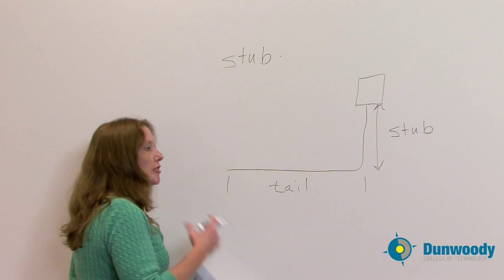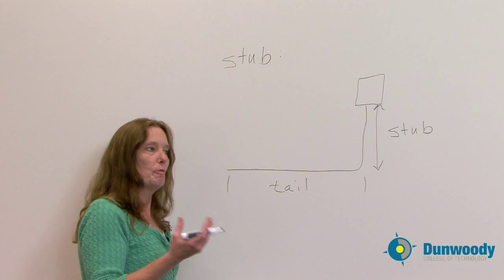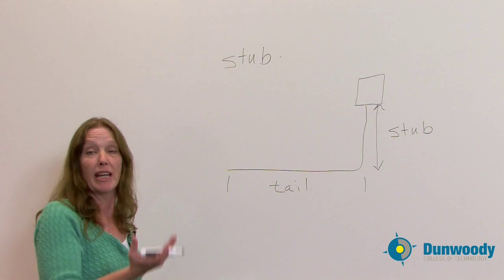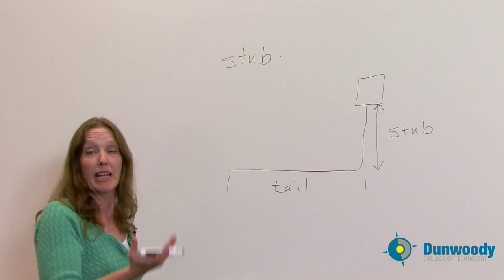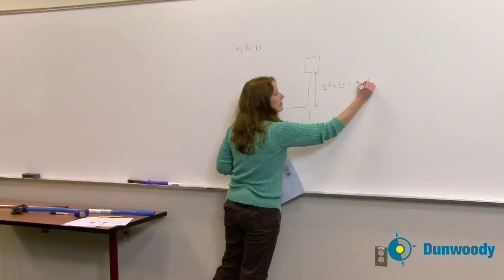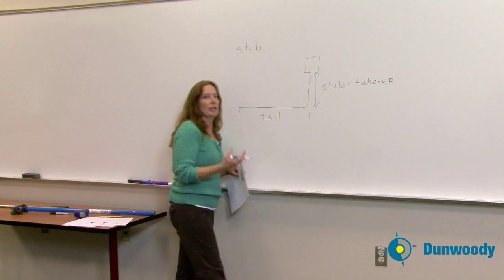We also have a couple other terms and they're basically a take up value. Because when we bend something, we tend to change the radius of the pipe or make it a little longer or a little shorter. So what we have is what we call a stub take up. And the stub take up is the amount of pipe that we're going to gain by the lift of the 90 degree bend.